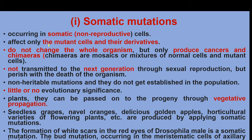First, we have somatic mutations. Somatic cells are non-reproductive cells. Somatic mutations affect only the mutant cells. They do not change the whole organism, but can produce cancer and chimeras — a mixture of cell types.